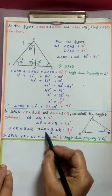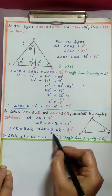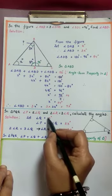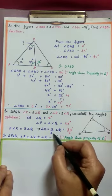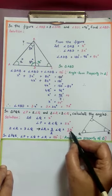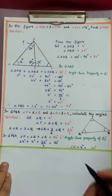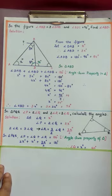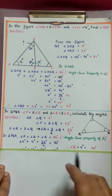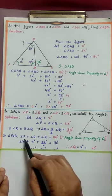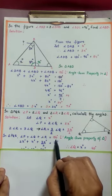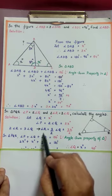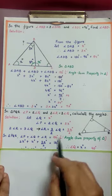From the relation 2 times angle R equals 3 times angle Q, making angle R the subject: angle R equals 3 by 2 times angle Q. Since angle Q is X degrees, angle R is 3X/2 degrees. Now all interior angles of triangle PQR are in terms of X. Using the angle sum property: angle P plus angle Q plus angle R equals 180 degrees. Substituting: 2X plus X plus 3X/2 equals 180 degrees.